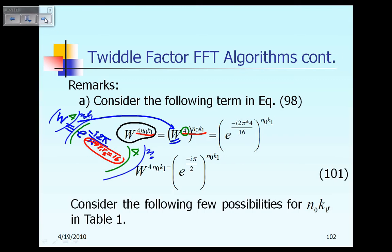Something can be simplified. For example, 4 times 2 is 8 divided by 16, so that will become 2. On the right-hand side, what you have is E raised to the power of minus i times pi divided by 2, all raised to the power N0K1. And that is shown in equation 101.